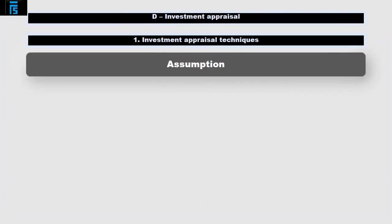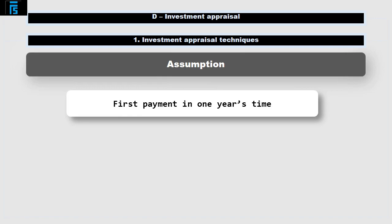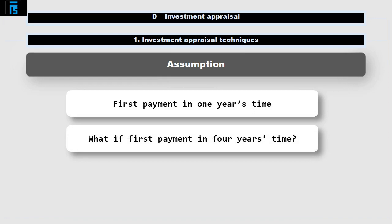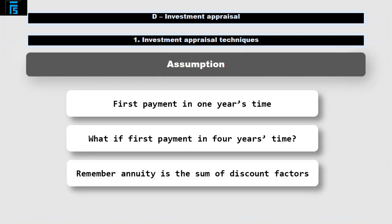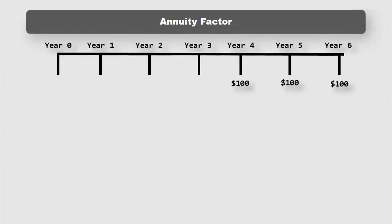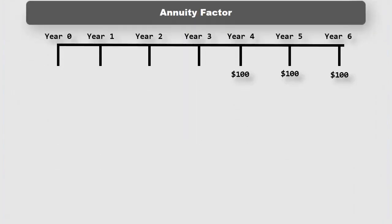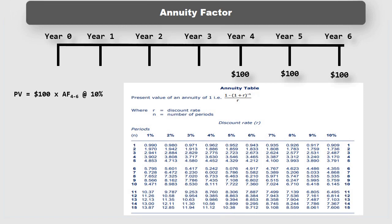The annuity tables assume that the first payment under the annuity will be in one period's time. This may not be the case — for example, it may start in four years' time. This doesn't mean the tables can't be used, so long as you remember that an annuity factor is simply the sum of the individual discount factors. Suppose, then, that our three year $100 annuity starts in four years' time. The present value will be $100 times the annuity factor from years 4 to 6 at 10%. We can calculate the annuity factor as follows.